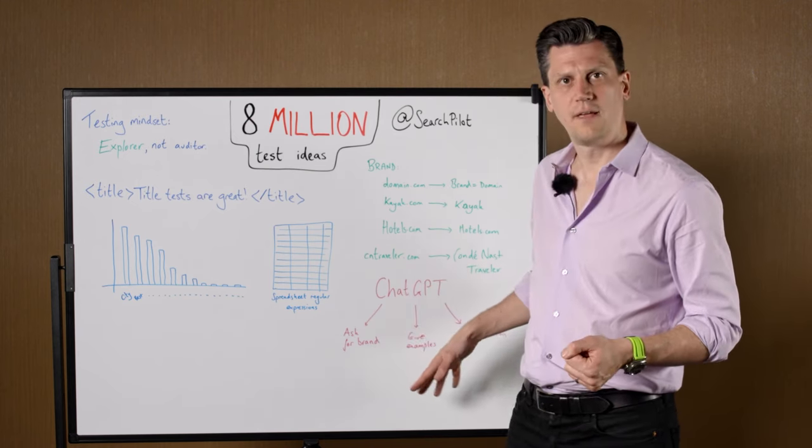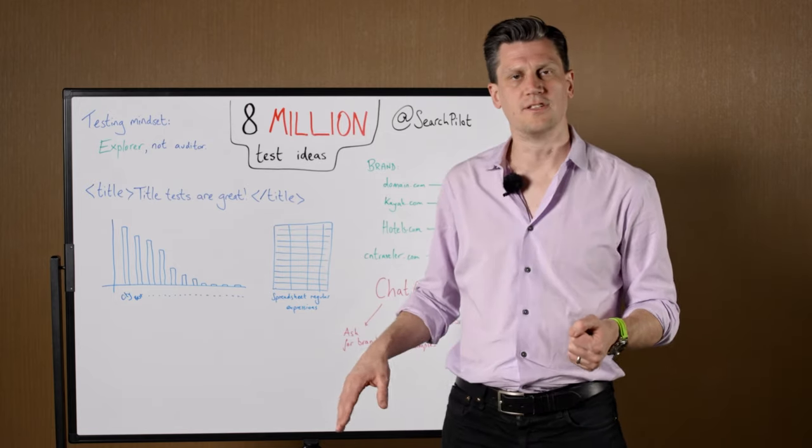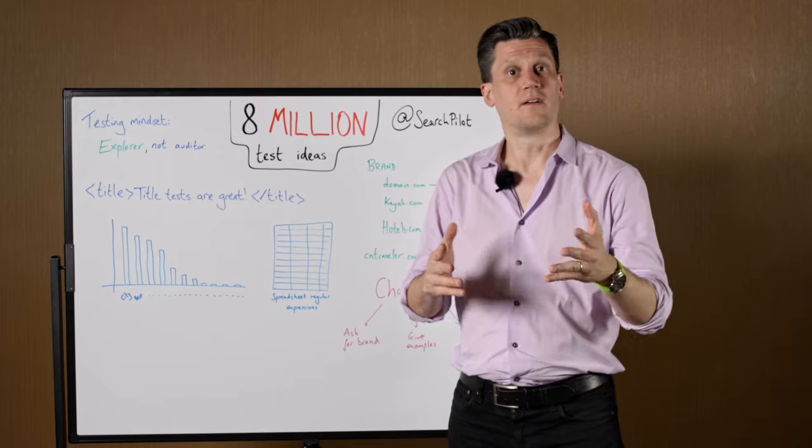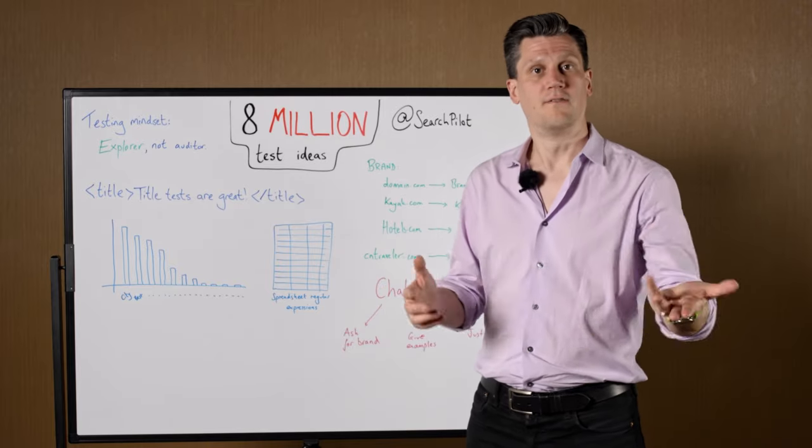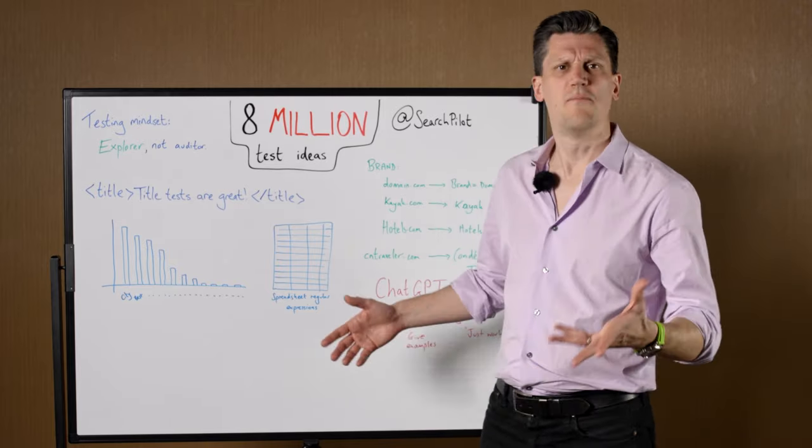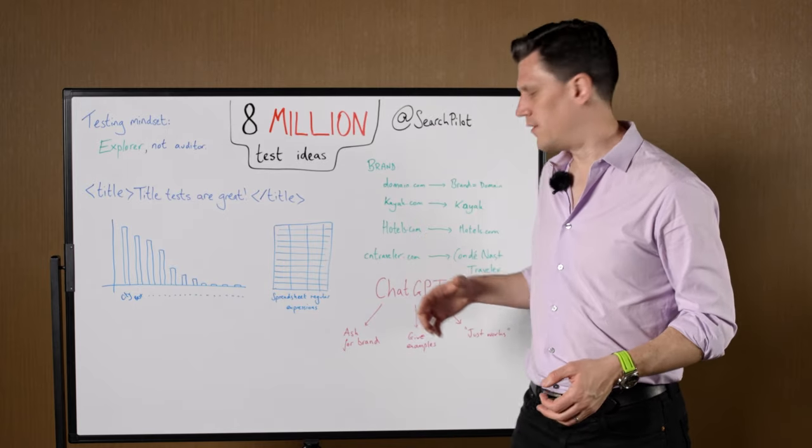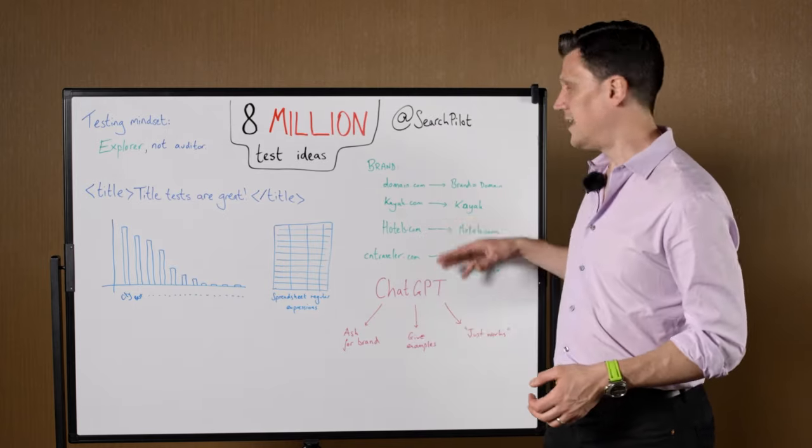You can create a prompt that just works for ChatGPT. I've experimented with a few things and you can start out just asking. You can say, I'm going to give you a list of domains, and I would like a list of brands returned for those domains. And that prompt will get you part of the way there. It works even more powerfully, I've found, if you give it some examples. Just like I did here, you can give the prompt saying, for example: